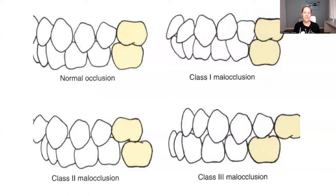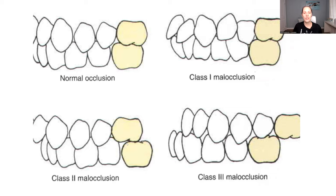Hello everybody, welcome back. Let's talk about the different classes of occlusion. The perfect, ideal occlusion is normal occlusion, which is class one.